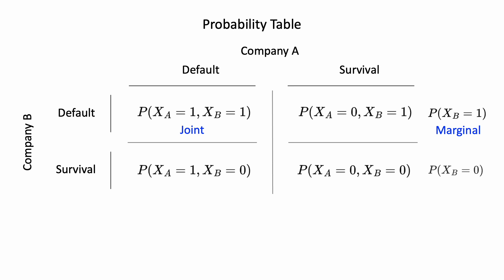Similarly, we can get the marginal probability of company B surviving, which is the sum of the second row. And the marginal probabilities of company A going default or surviving, which are the sums of each column.